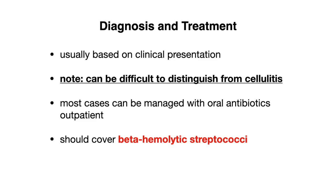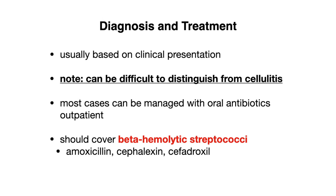Diagnosis and treatment of erysipelas is usually based on clinical presentation, making it a clinical diagnosis. However, in real-life cases it can be difficult to distinguish from cellulitis, and oftentimes there is overlap between the two. Most cases can be managed with oral antibiotics in the outpatient setting, and you mainly want to cover for beta-hemolytic strep. Commonly used antibiotics include amoxicillin, cefalexin, and cefadroxil.